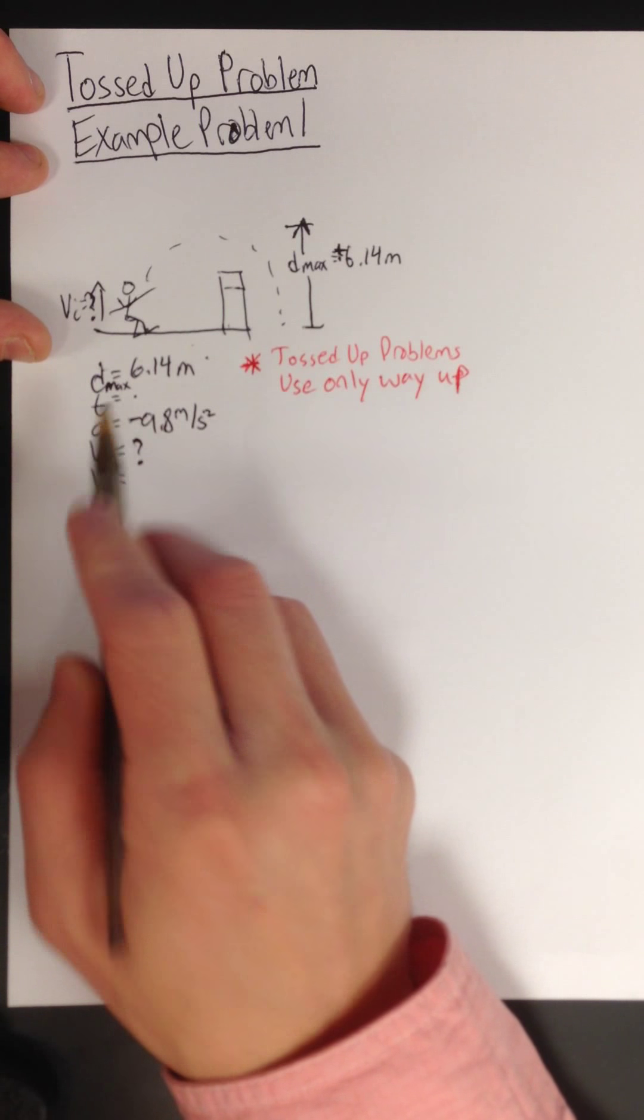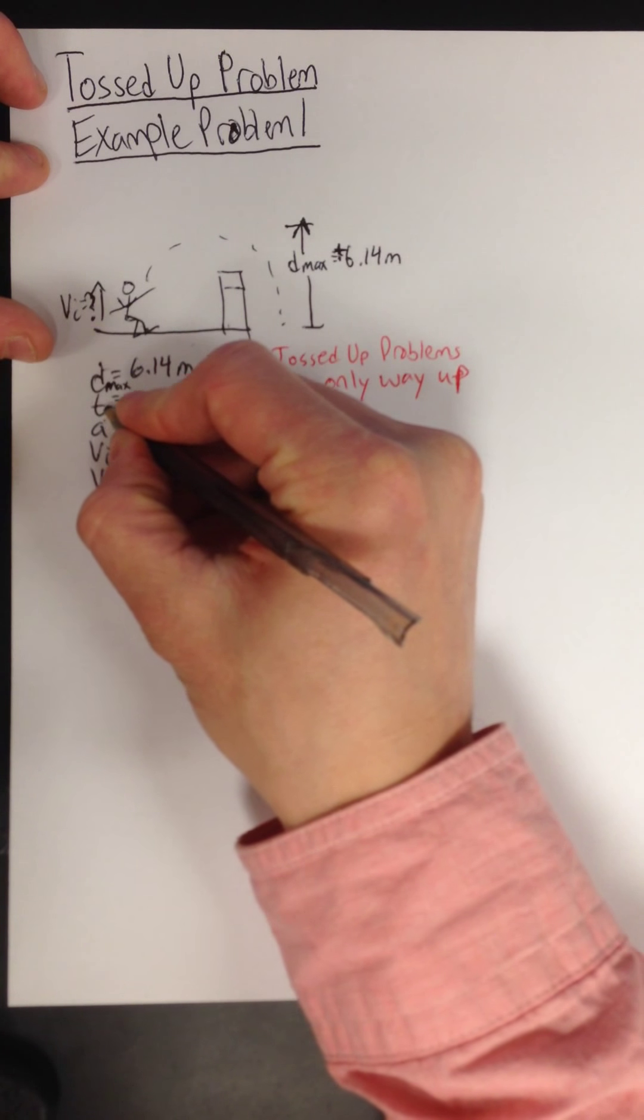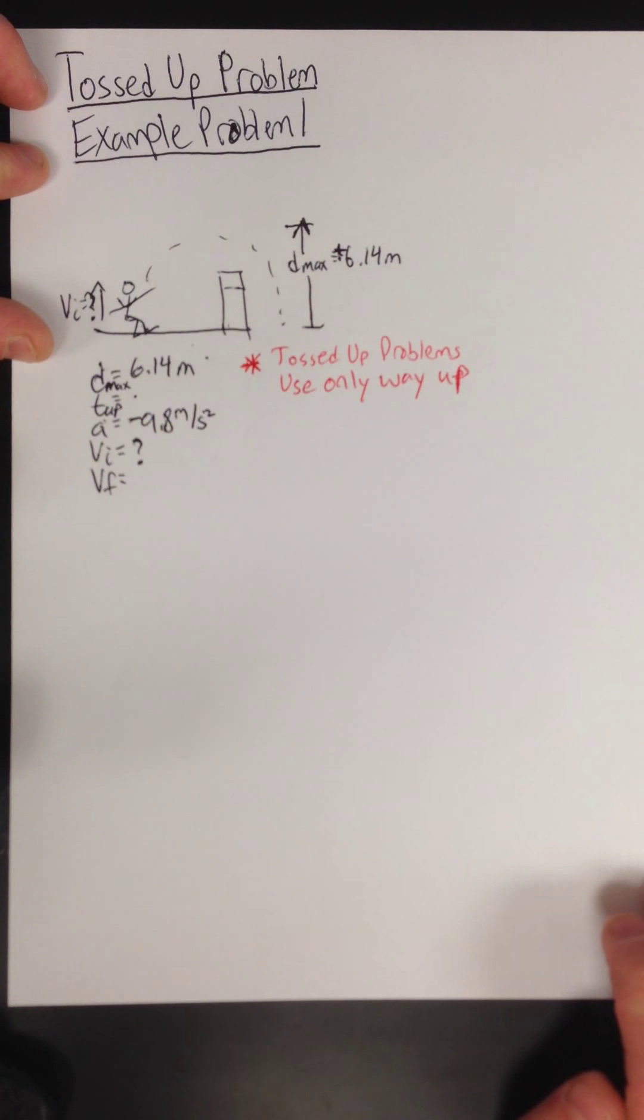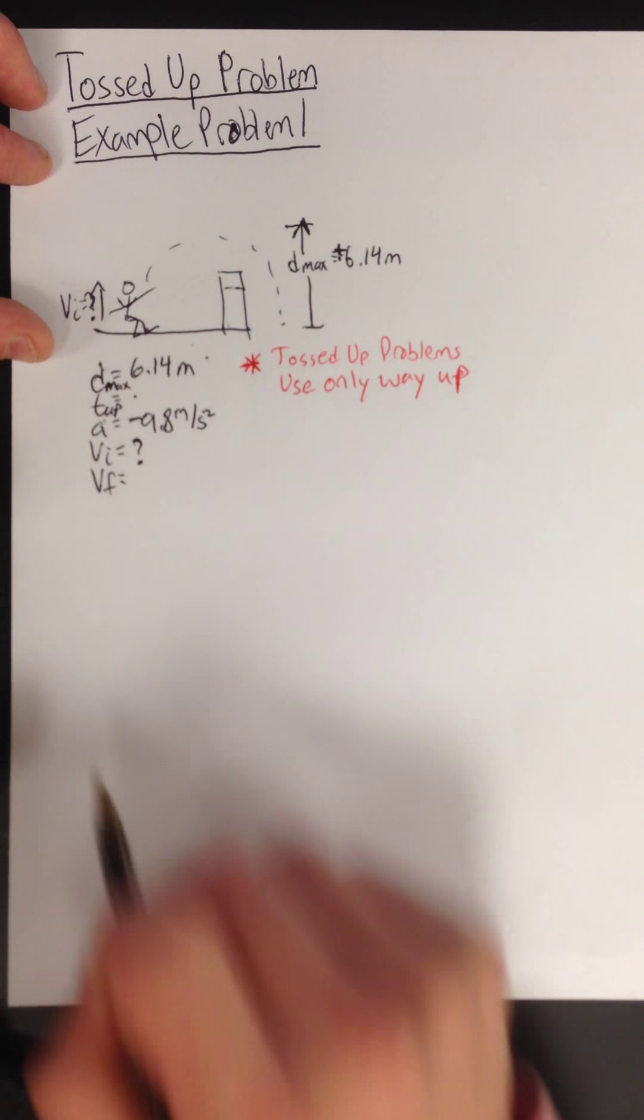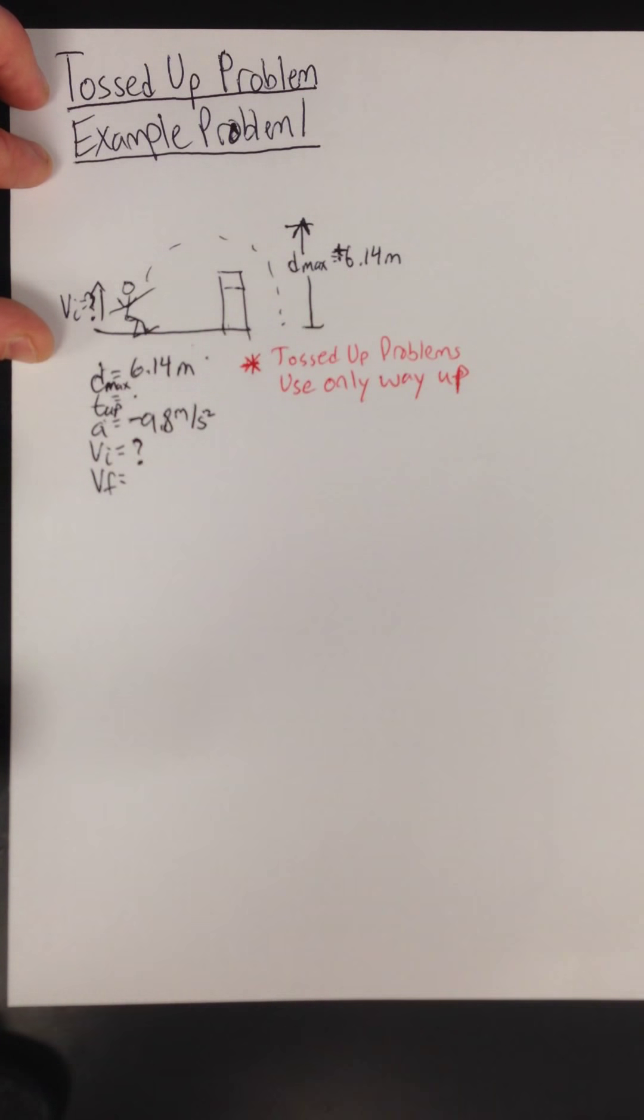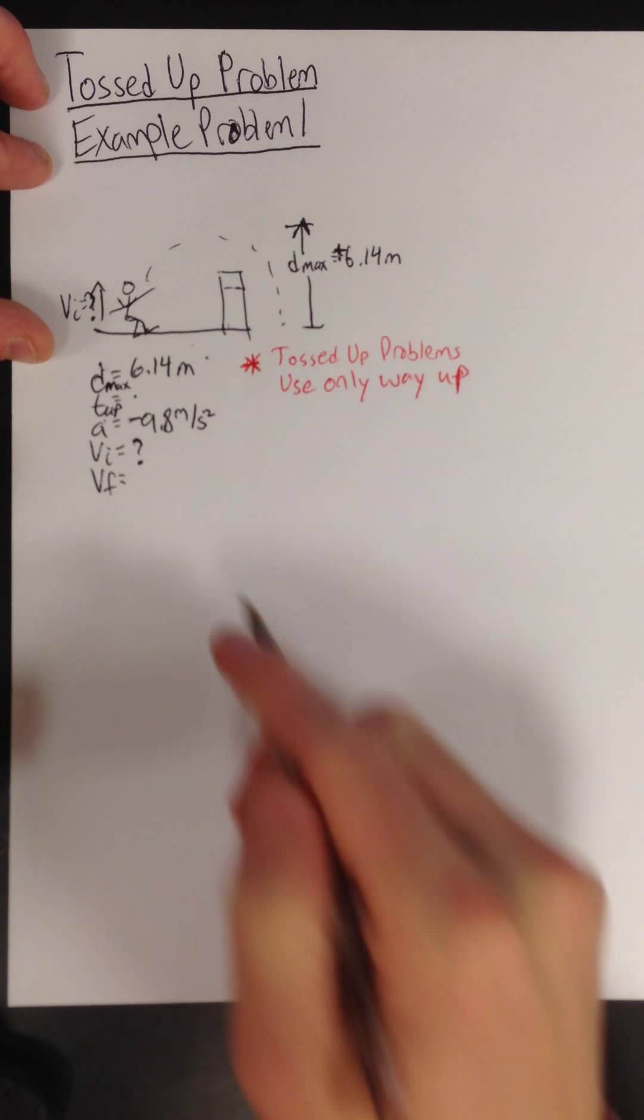How much time does it take him to go up? Well, clearly we will be using T up if we use time at all. Acceleration is always gravity's acceleration, even on the way up.